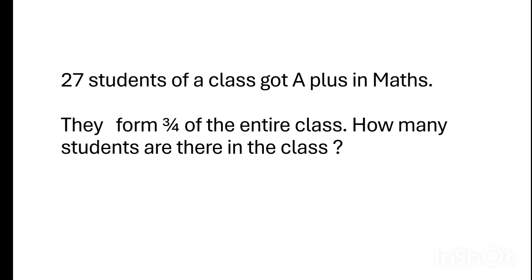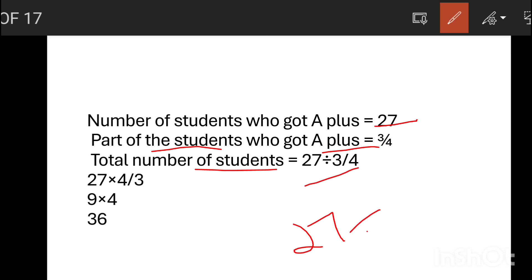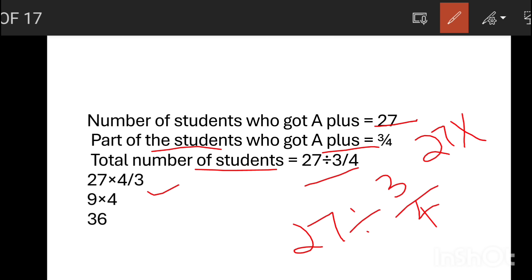Now we can see what we can do. The number of students who got A+ is 27. The part of students who got A+ is 3 by 4. The total number of students is 27 divided by 3 by 4. That is 27 into 4 by 3.